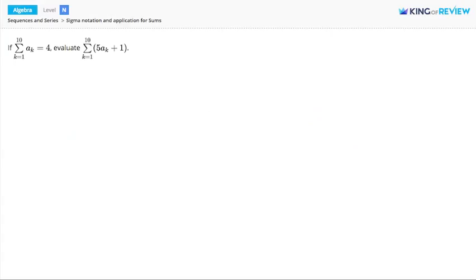Hi, this is King of Review. Here we're told the sum of the terms ak from k equals 1 to 10 is equal to 4, and we want to find the sum of 5 times ak plus 1, again from k equals 1 to 10.